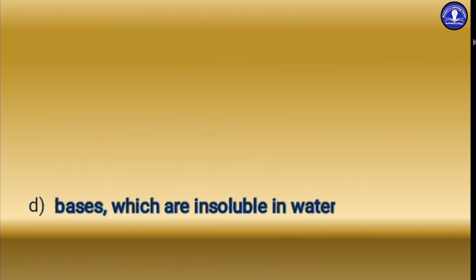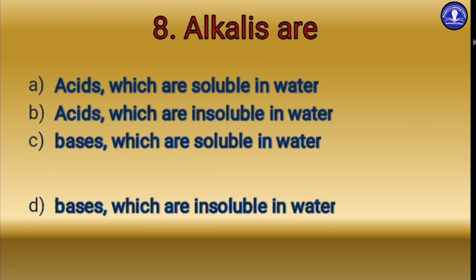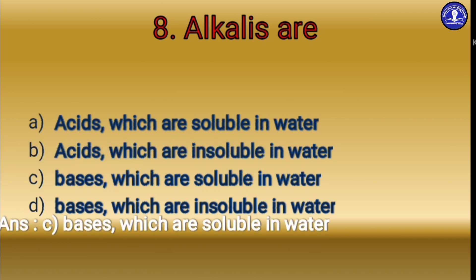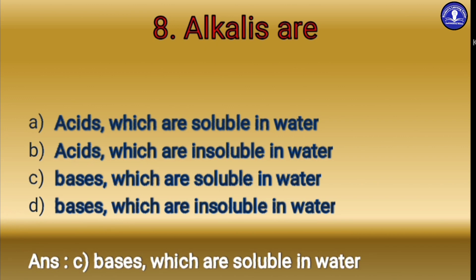Let's move to the next question. Alkalis are — option A acids which are soluble in water, option B acids which are insoluble in water, option C bases which are soluble in water, option D bases which are insoluble in water. The answer is option C: bases which are soluble in water.